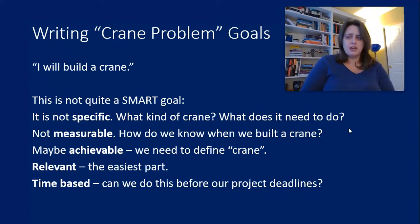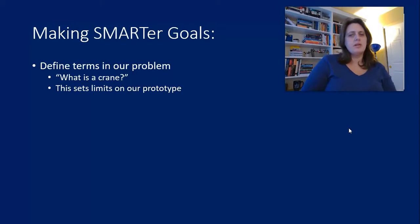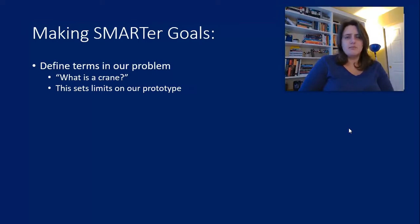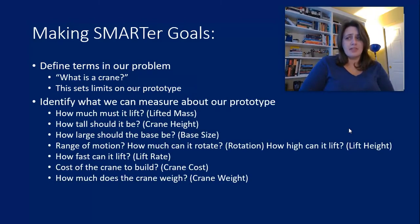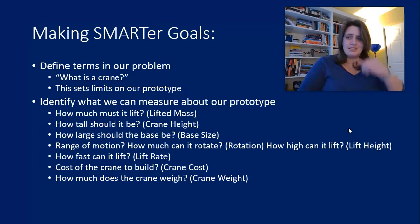Now that we know a little about SMART goals, let's look at what these might be. First, we need to define the things in our problem — identify what we mean by 'I want to build a crane' and set limits on our prototype. Here are some things we could actually measure about a crane: how much mass it has to lift (lifted mass), how tall it should be (crane height), how big the base should be (base size), the range of motion or rotation, how high it can lift something (lift height), how fast it can lift something (lift rate), how much it costs to build, and how much the crane itself weighs.